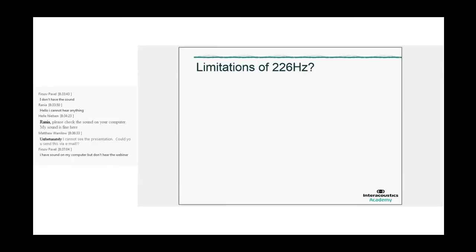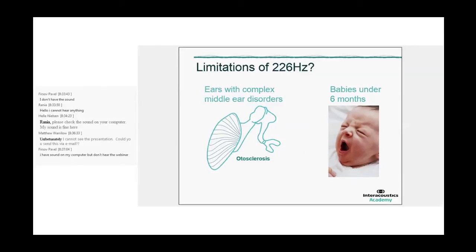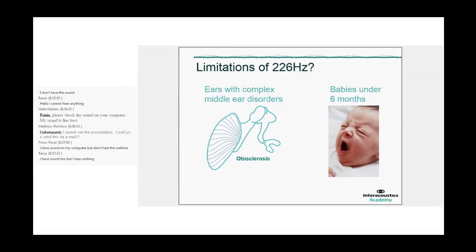So what are limitations of 226 hertz? First of all, if we test babies under 6 months, the problem is that with 226 hertz, we measure ear canal properties instead of the properties of the middle ear. And to overcome that, we can use 1000 hertz. And secondly, the 226 hertz probe tone doesn't really differentiate well for quite a lot of pathologies of the middle ear. This is just one example. If we look at otosclerosis, where there is a fixation of the stapes, then basically the tympanogram can look pretty normal. So limitation is basically that it doesn't differentiate very well with 226 hertz.